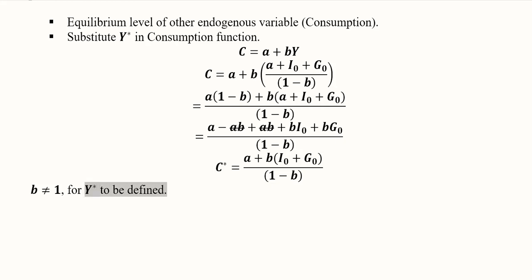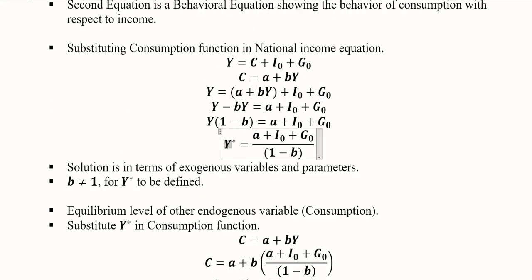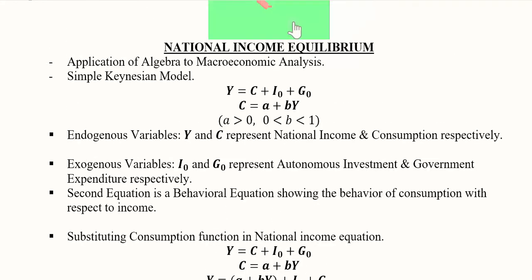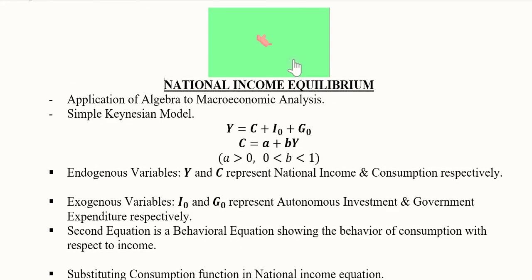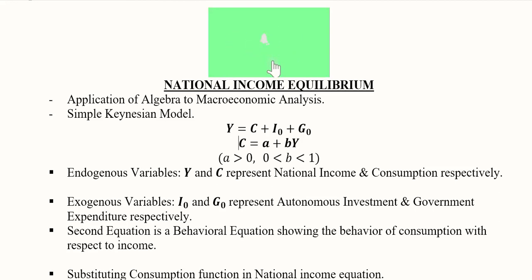Y will be defined if b is not equal to 1. So this was the equilibrium level of consumption and equilibrium level of national income that we found by using simple algebra. In this way we can do the national income analysis and find its equilibrium values under the Keynesian model. Thank you.